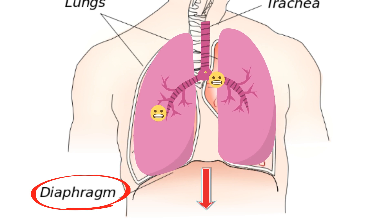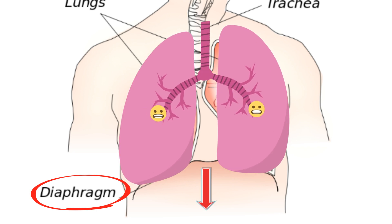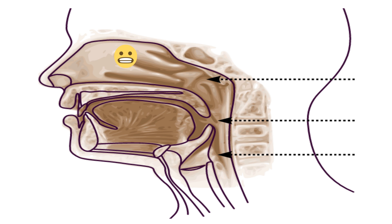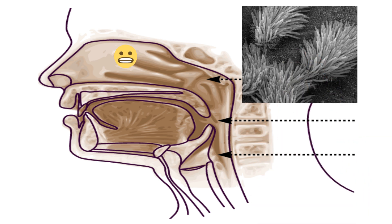As oxygen and air enters the nose and mouth, it enters into the nasal passages. Your nose and nasal passages have tiny hair called cilia and also mucus that helps to filter out dirt and pollen from the air.